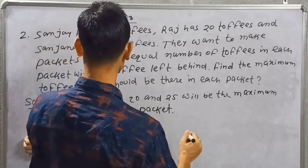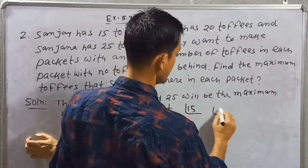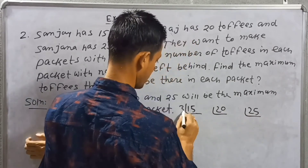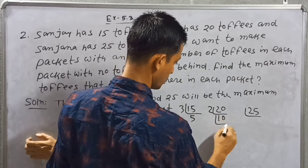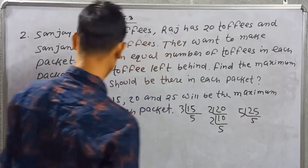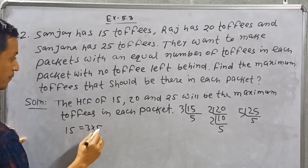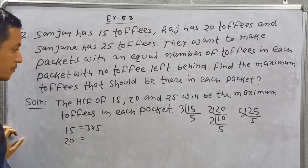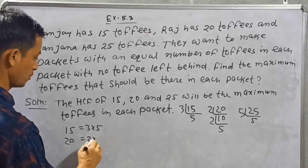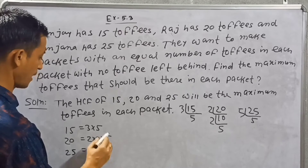So: 15 = 3 × 5; 20 = 2 × 2 × 5; 25 = 5 × 5.